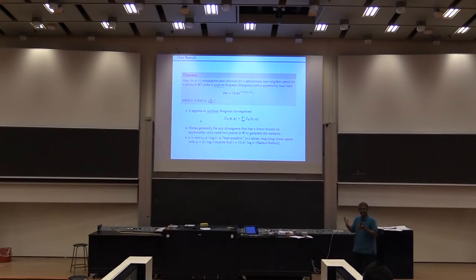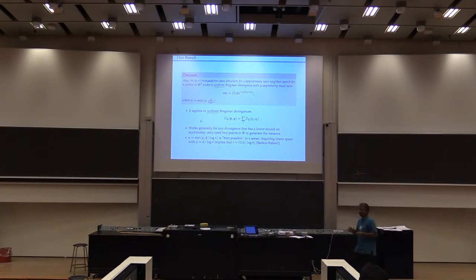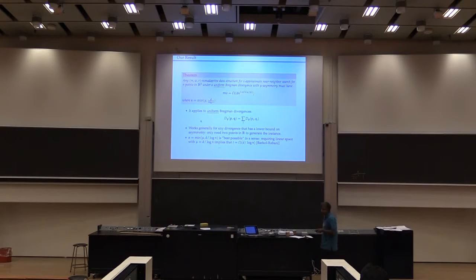And this bound is in some sense best possible — once you get to that level of asymmetry, the result hits up against known lower bounds for exact near-neighbor search. It tells us that we'd have to do a lot more work if we want to push our bounds any further.